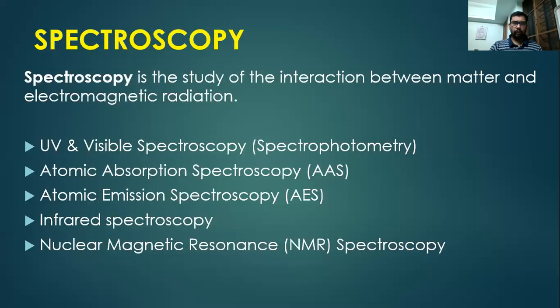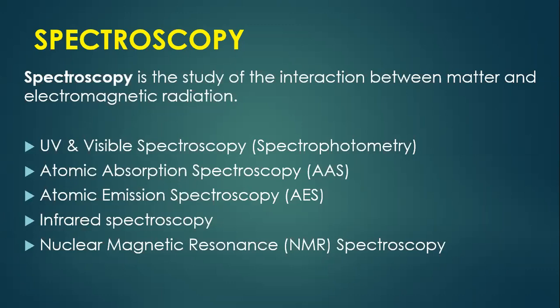What do you mean by spectroscopy? Spectroscopy is the study of interaction between matter and electromagnetic radiation. There are different types of spectroscopic studies, like UV and visible spectroscopy or otherwise called spectrophotometry, atomic absorption spectroscopy, atomic emission spectroscopy, infrared spectroscopy, and nuclear magnetic resonance.